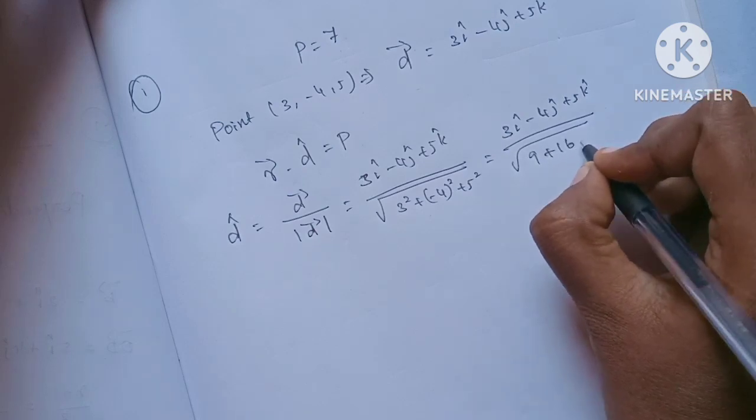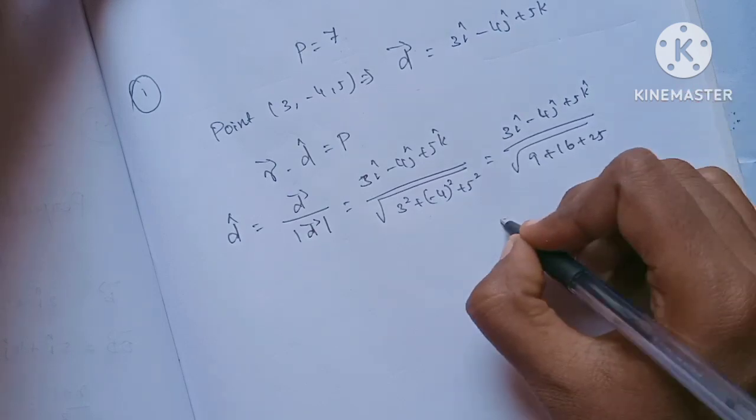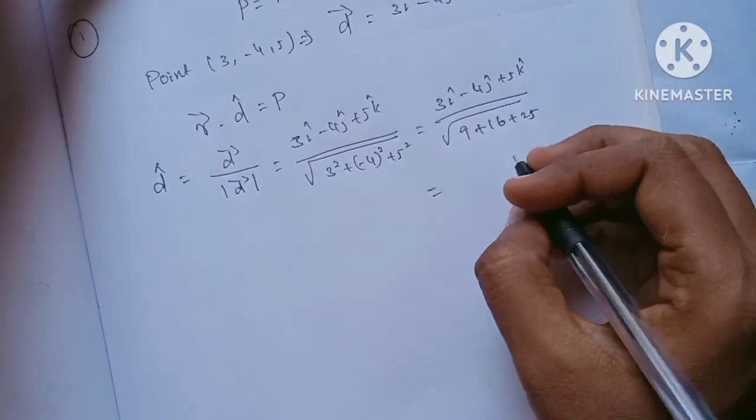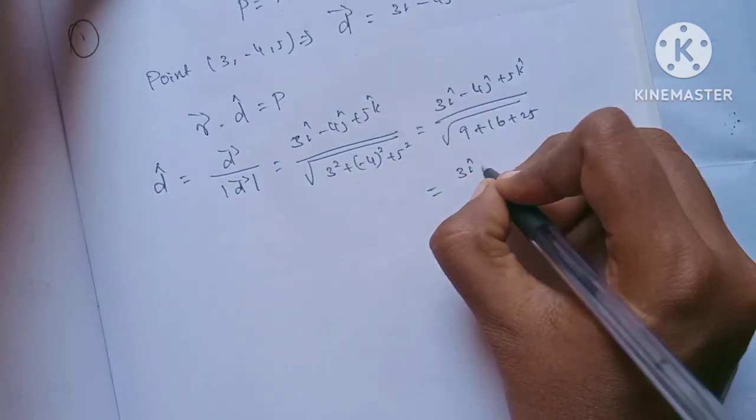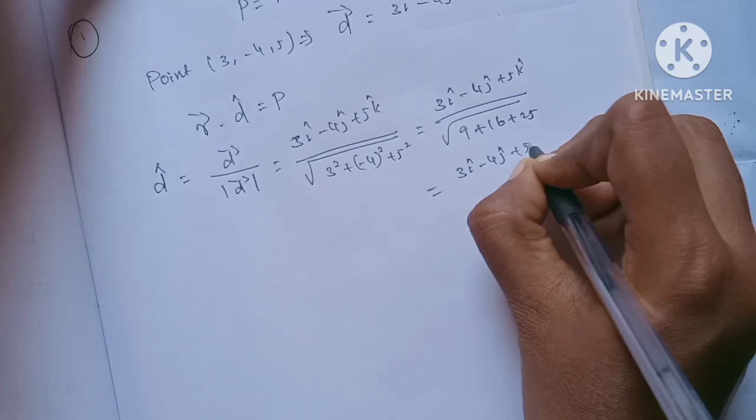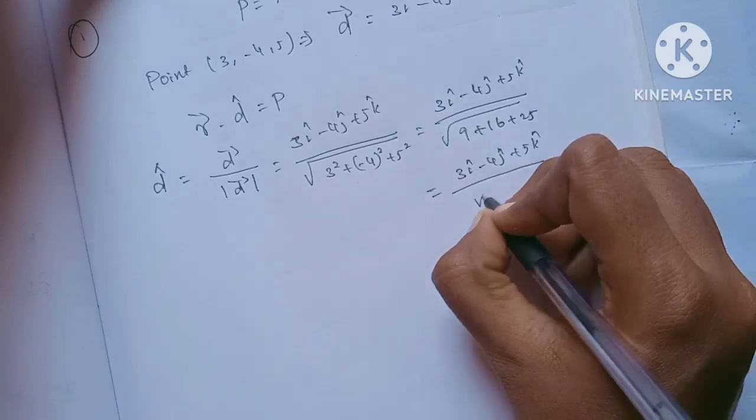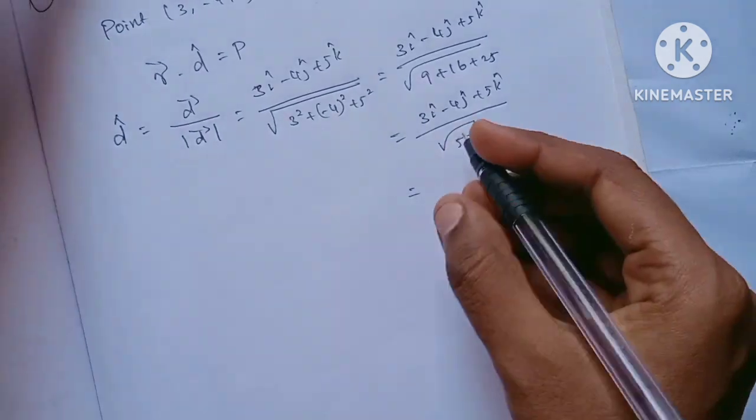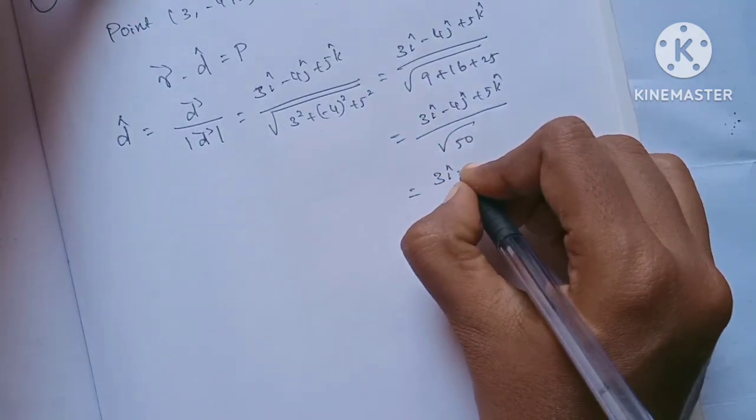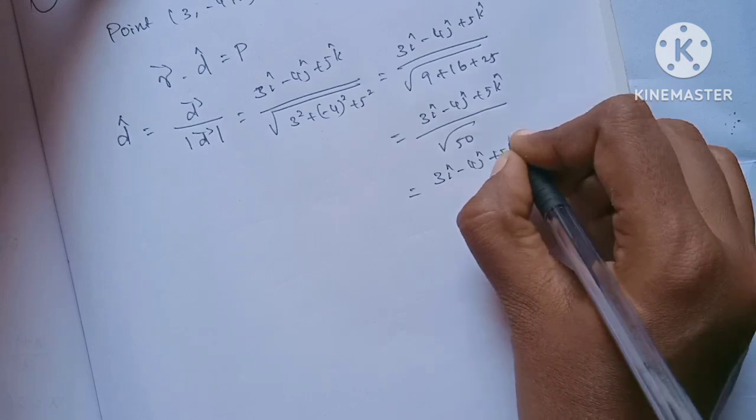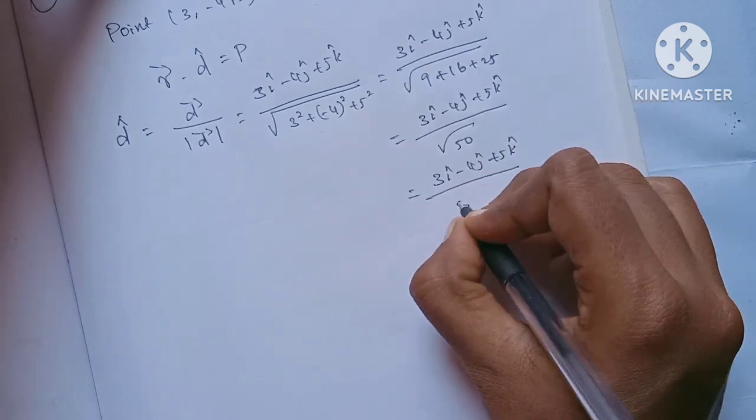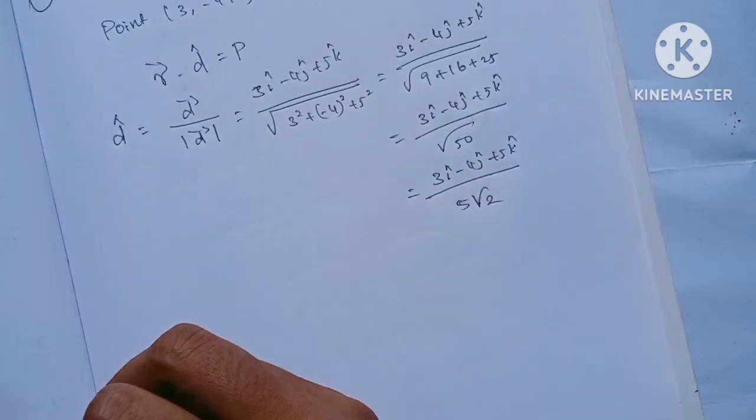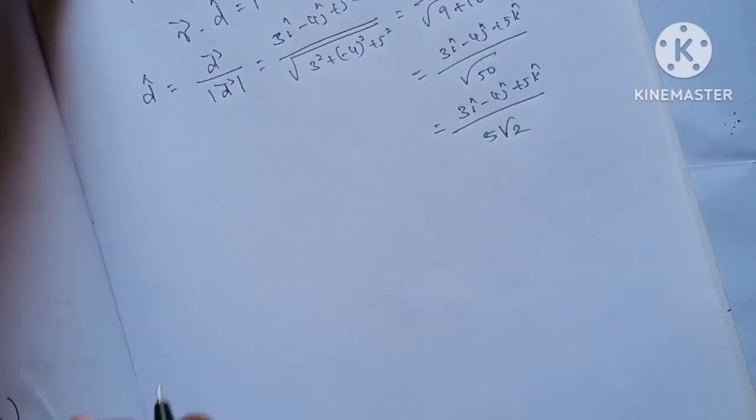...plus 16 plus 25, which adds to 50. So we have 3i - 4j + 5k divided by root 50. Since 50 equals 25 times 2, we can simplify this to 3i - 4j + 5k divided by 5 root 2.